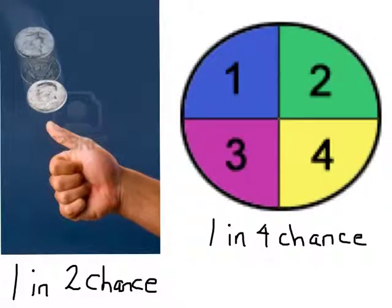Alright, so we've all flipped coins, and we've all spun a spinner, and you know that when you flip a coin, there's only two outcomes, heads or tails, so every time you flip it, you have a 1 in 2 chance of getting one or the other.